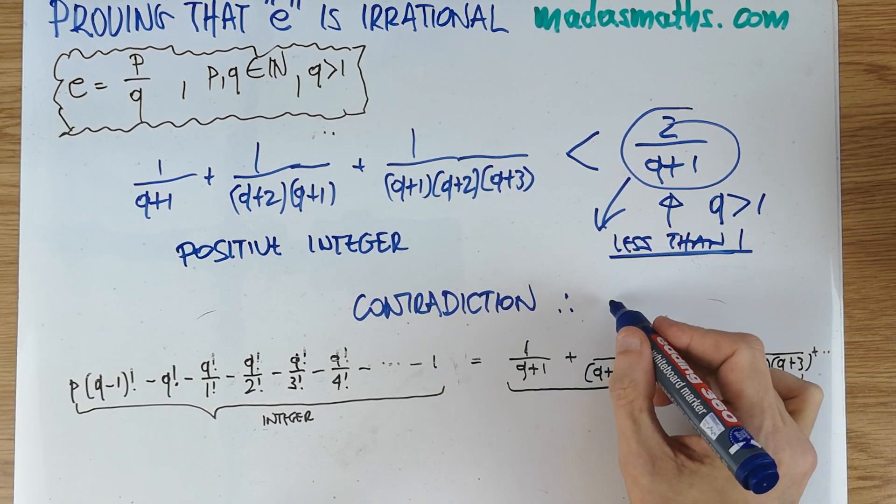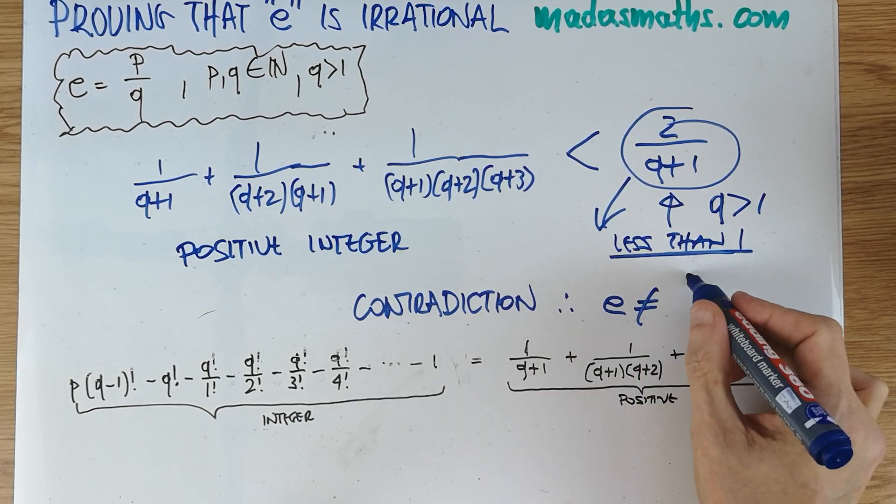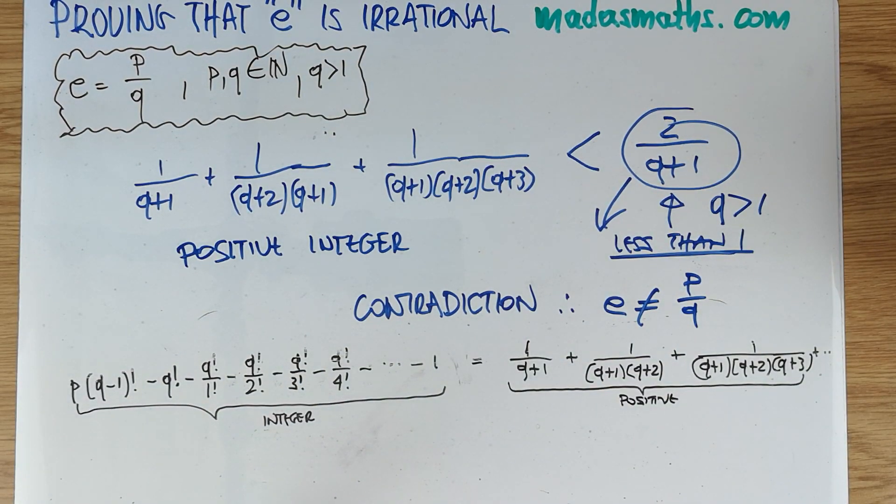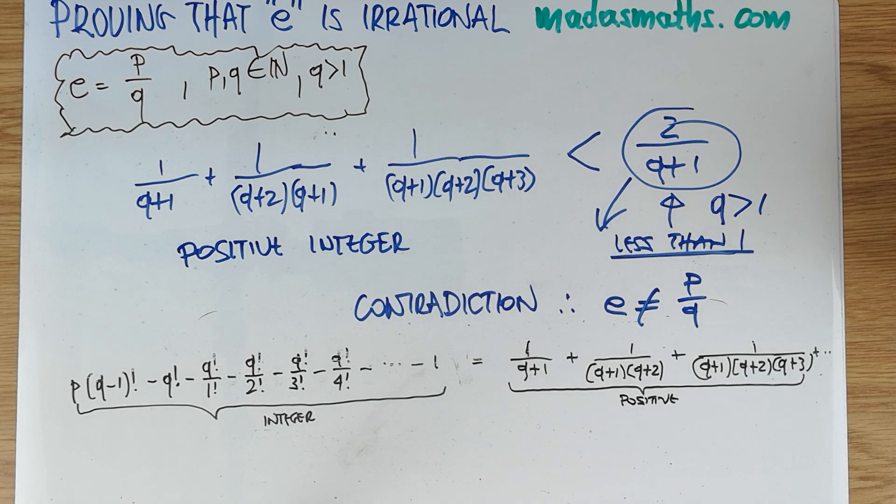Therefore, e cannot be written as p over q subject these conditions, and the proof concludes.